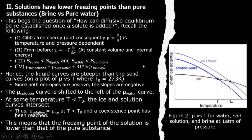Step two, solutions have lower freezing points than pure substances. This really begs the question of how can diffusive equilibrium be re-established when solutes or impurities are added. Recall the following.